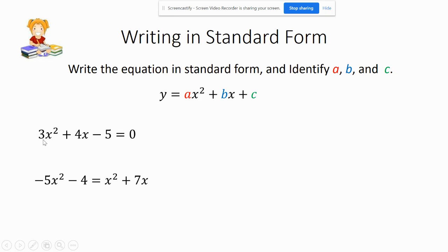If you look at our first problem here, the 3X squared plus 4X minus 5, it is. And basically all it means is the value in front of the X squared is our A, the value in front of the X is our B, and our constant term is C.